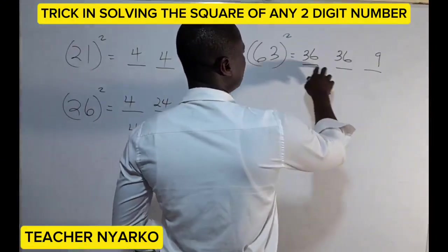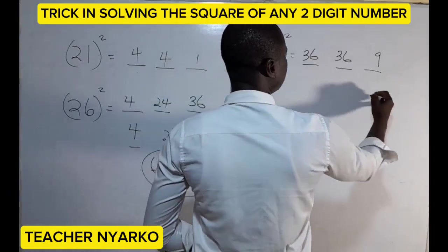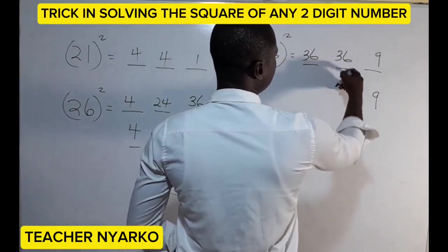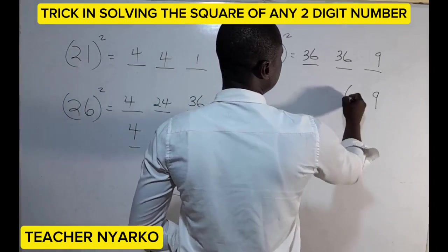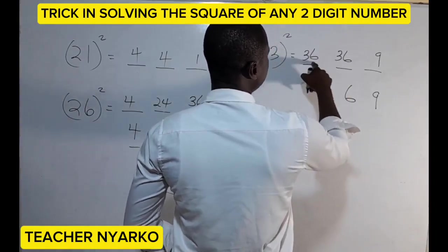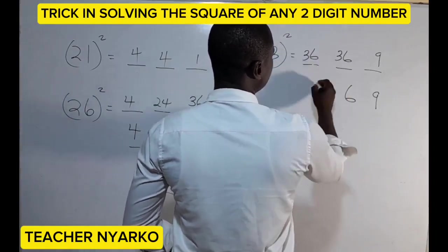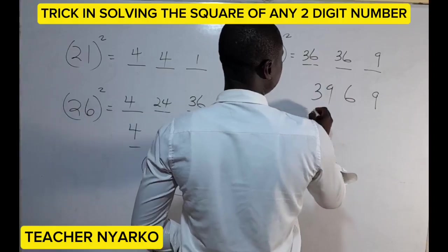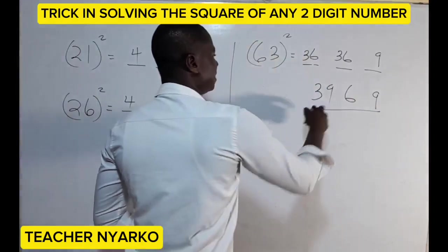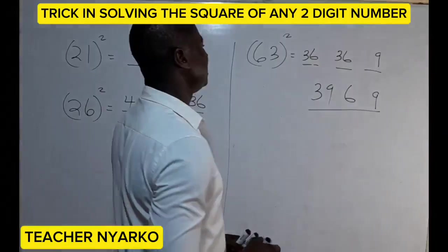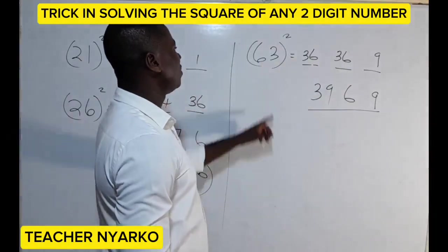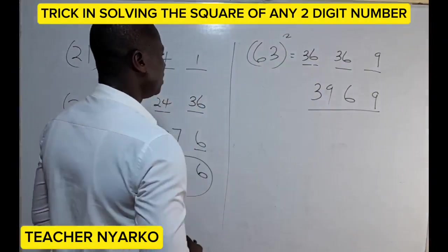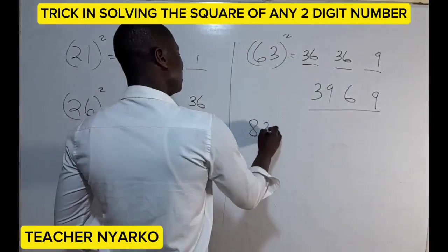We have single digits and double digits, so we reduce. The three and six come down; the three is added to give 39. So 63 squared equals three thousand nine hundred and sixty-nine — 3969.